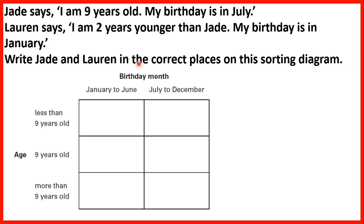Write Jade and Lauren in the correct places on this sorting diagram. So first, let's look at Jade. She's 9 years old, so she'll be in this row here, because that's the row for children with an age of 9 years old. And her birthday is in July, so she needs to be in this column here, because that's her birthday month of July to December. So Jade needs to be written here to show that she's 9 years old, and her birthday month is from July to December.